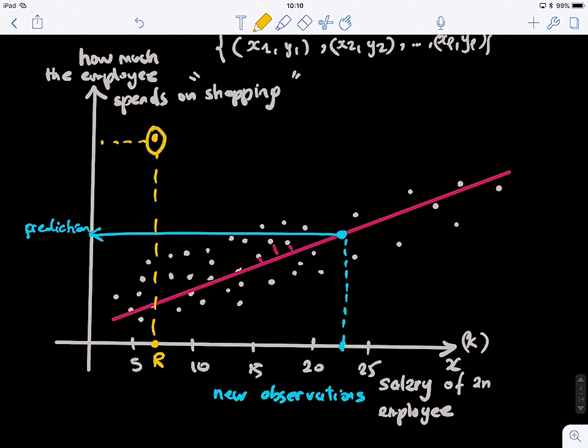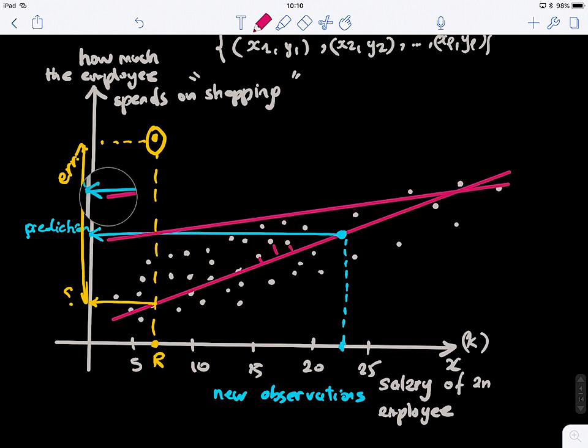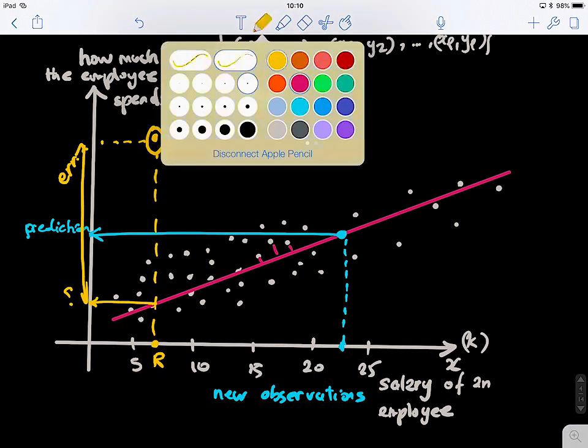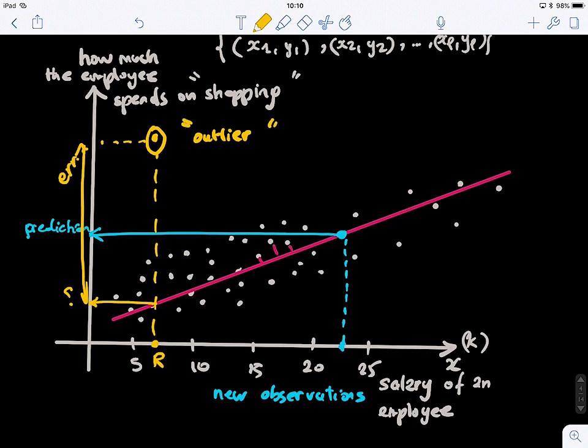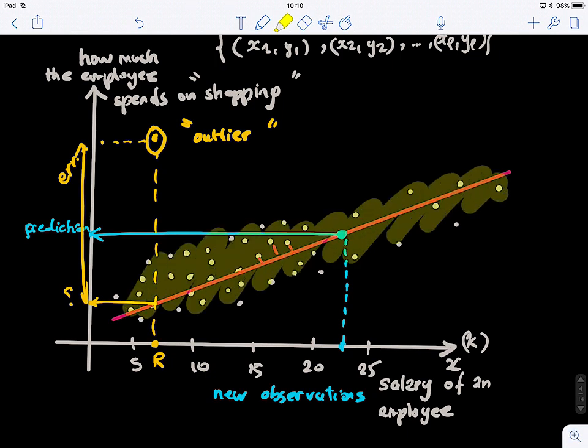So in this case, what do we have? We have a new point. And imagine if we want to predict how much she's spending, we're going to get a very large error because it's different from the ground truth. And the second thing, if you want to retrain the model, it might be highly biased by this new point because it will try to get closer to it. So the problem here is when you have something we call outliers—an outlier is a point that is far away from the main distribution of the data. Then you need to think about a smarter strategy to solve this problem.